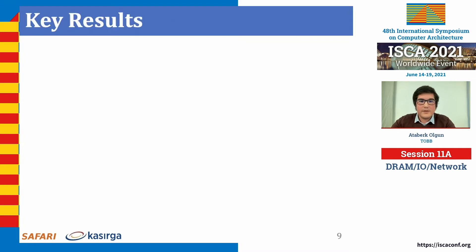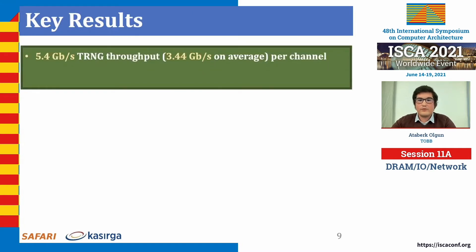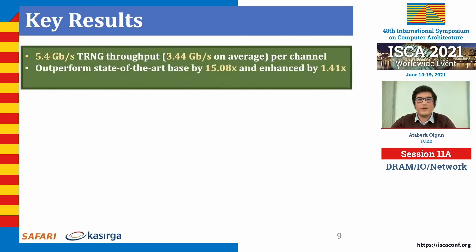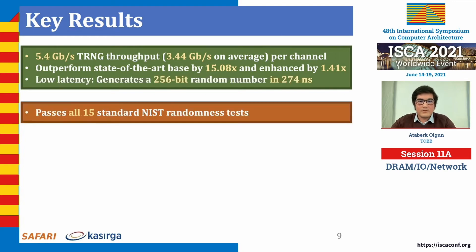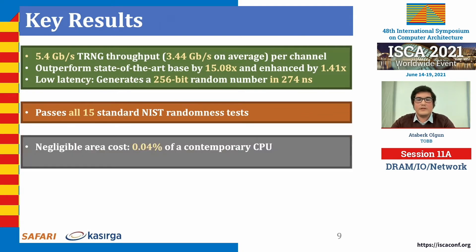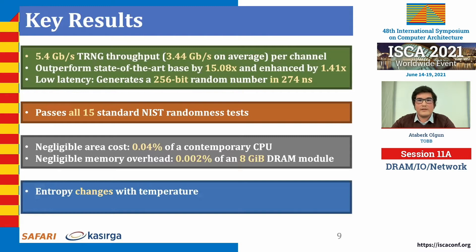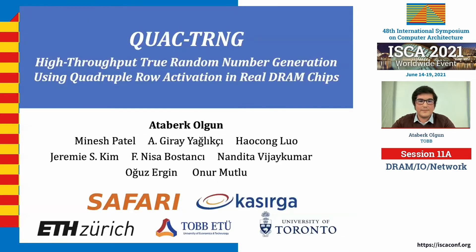QoAC-TRNG provides true random numbers at up to 5.4 gigabits per second throughput, outperforming state-of-the-art base versions by 15 times and throughput-optimized versions by 1.4 times, and with very low latency. Random bitstreams generated using QoAC-TRNG pass all 15 standard NIST randomness tests. Including the accelerator for the cryptographic hash function, QoAC-TRNG introduces negligible area and memory cost. We observe that QoAC-TRNG is sensitive to temperature changes, but that time elapsed on the order of a month does not significantly affect quality.